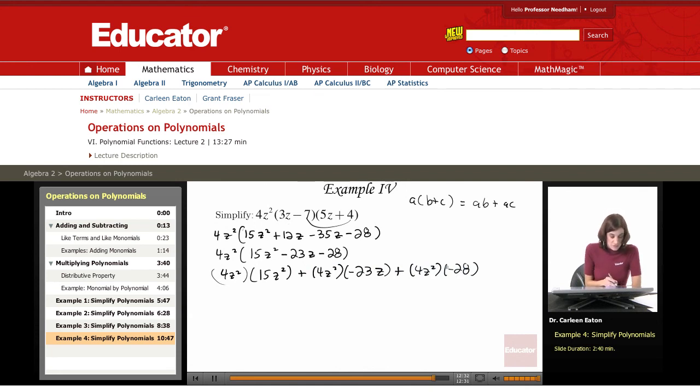So I get 4 times 15, that is 60. Remembering that a to the m times a to the n equals a, and then I add the exponents. So adding 2 and 2 to get 4. This is z to the fourth power.